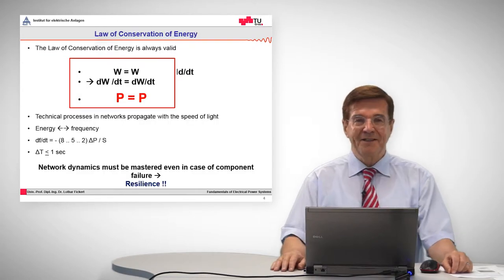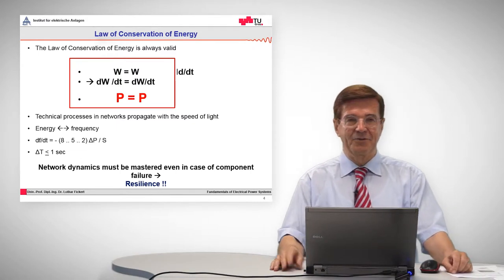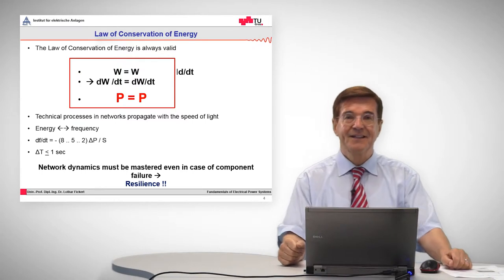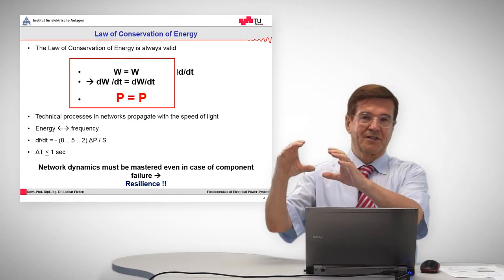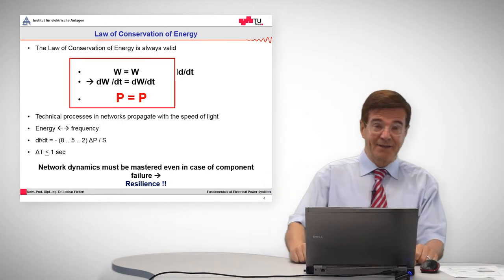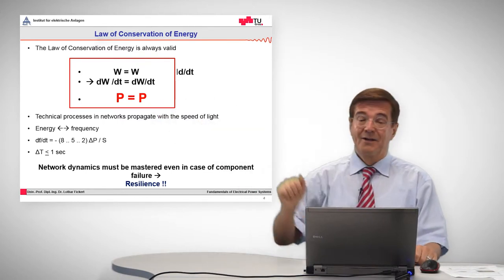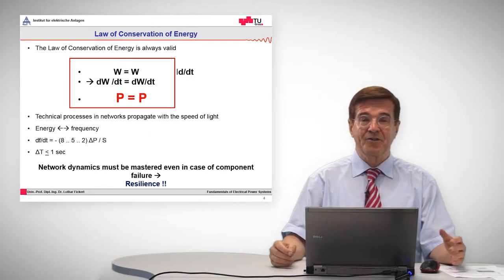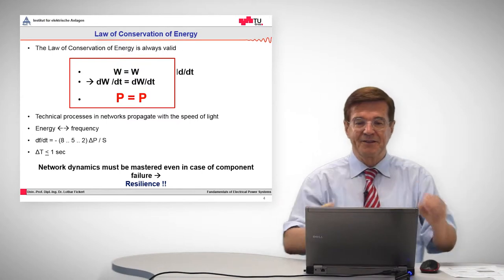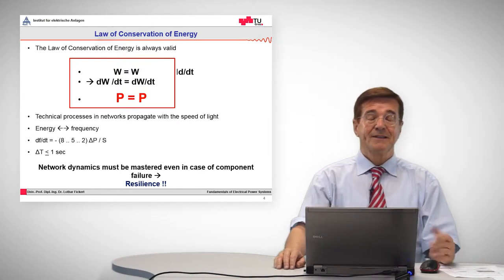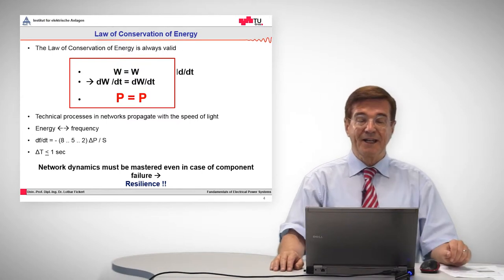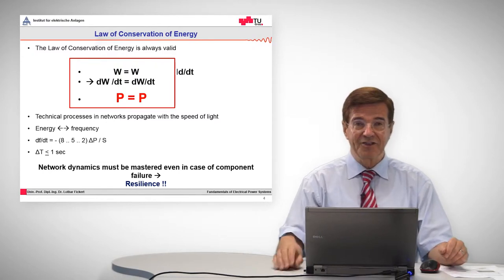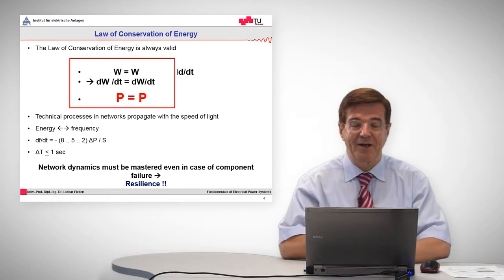The system stability relies on the law of conservation of energy, which is always valid. The law of conservation of energy says the energy in a system is always constant, all the time. And that means that the derivative, which means the power, is always constant when it fluctuates from one part of the system into the other. So, these technical processes in networks propagate with the speed of light and there is a strong relationship between energy and frequency, and I will explain to you how.